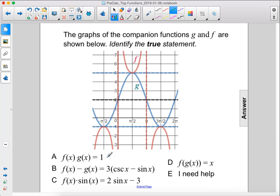f of x times g of x equals 1. This is not true. If you pick any point, say x value of pi over 2, g of x is 5 and f of x is also 5. So if you multiply those together it would be 25. So that's just one example of why this is not true.